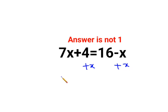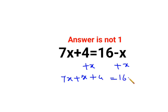So what we'll have is 7x plus x plus 4 equals 16. The minus x and plus x cancel each other out, and this gives you 8x plus 4 equals 16.